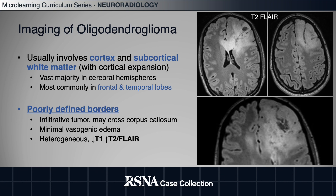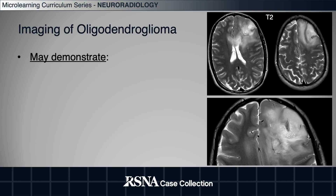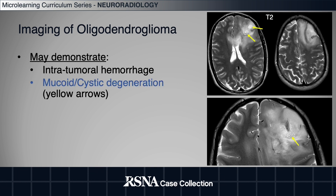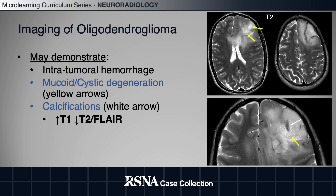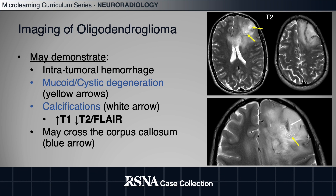They're usually heterogeneous, but generally T2 hyperintense and T1 hypointense. Tumor heterogeneity can include intratumoral hemorrhage, mucoid degeneration as seen in these small cystic T2 hyperintense foci, and they often demonstrate calcifications.